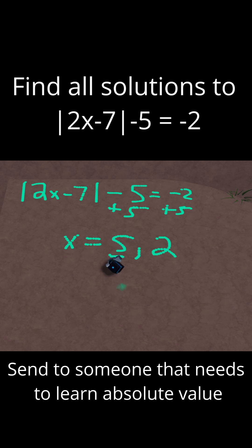Let's test 5 first. If I test 5, that'll be 2 times 5 minus 7 in absolute value minus 5 is supposed to be negative 2. So this would just be 10 minus 7, and 10 minus 7 is just 3. So we have the absolute value of 3 minus 5 is equal to negative 2. Absolute value of 3 is just 3. And then 3 minus 5, is that equal to negative 2? It is. So that means this works out. x equals 5 is indeed a solution.